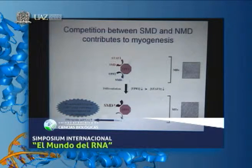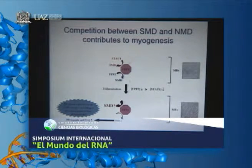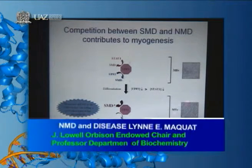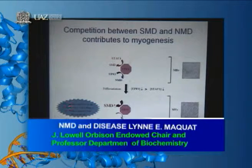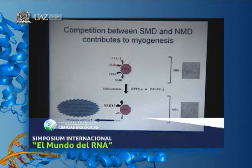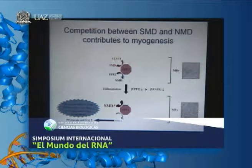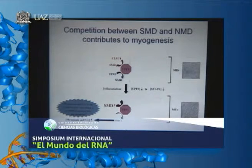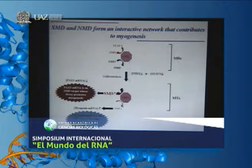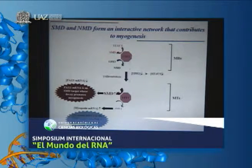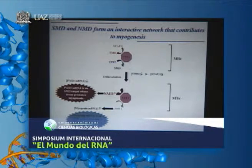Myogenin mRNA, which is a natural NMD target because it has an upstream open reading frame, is required for the production of myotubes. It makes sense that its levels increase not only transcriptionally but by increasing the mRNA half-life because the efficiency of NMD is decreased during myogenesis. Both SMD and NMD contribute to myogenesis, forming an interactive network of post-transcriptional regulatory mechanisms that work coordinately with transcriptional regulatory mechanisms.